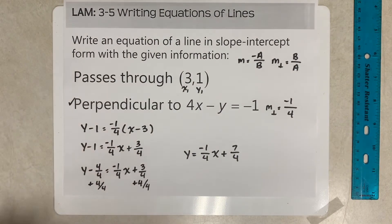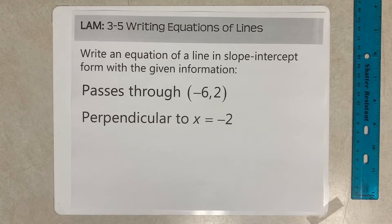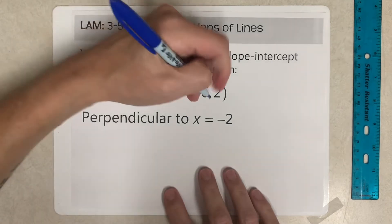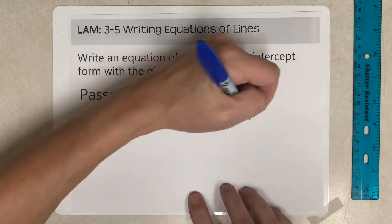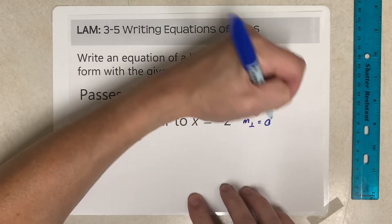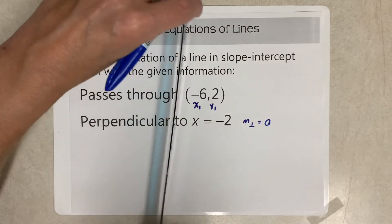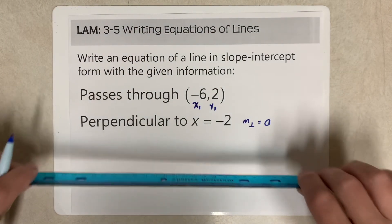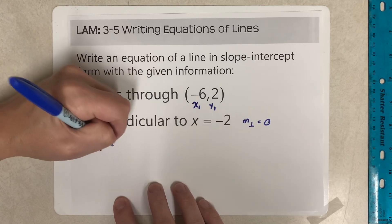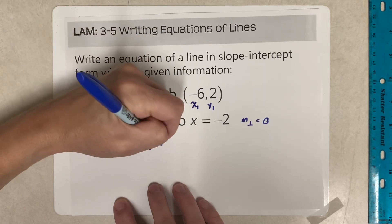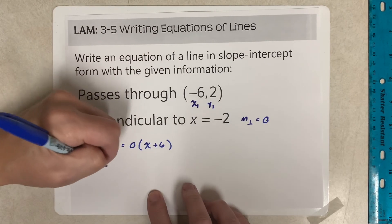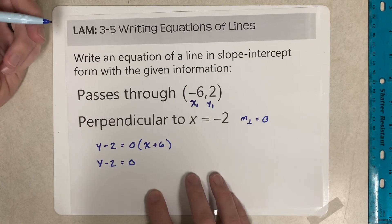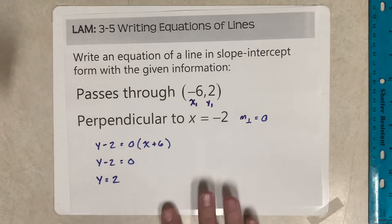This one is perpendicular to x equals negative 2, through point (negative 6, 2). x equals negative 2 is a vertical line with undefined slope. The perpendicular to a vertical line is horizontal, which has slope 0. So y minus 2 equals 0 times (x plus 6). Multiplying by 0 makes everything on the right go to 0, giving y minus 2 equals 0, so y equals 2. That's the line in slope-intercept form.